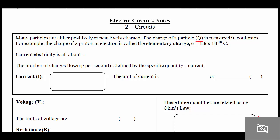You guys already know that many particles are either positively or negatively charged, but the charge of a particle we refer to as Q, and this is something that we measure in Coulombs. For example, the charges on protons and electrons, which are the same—protons are positive, electrons are negative—is something called the elementary charge, and it's equal to 1.6 times 10 to the negative 19 Coulombs.